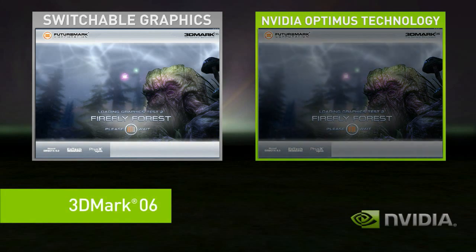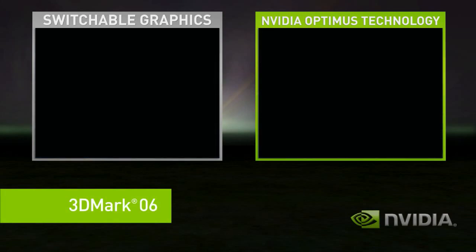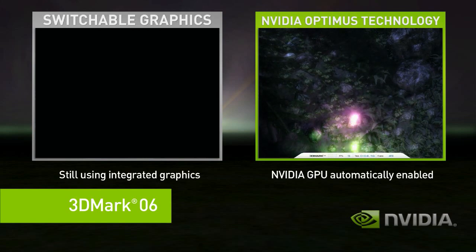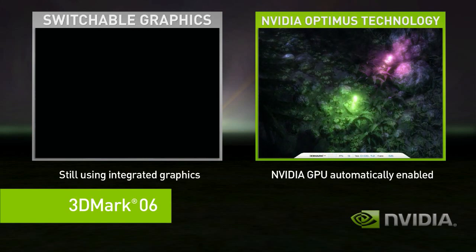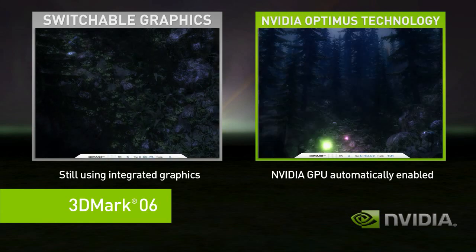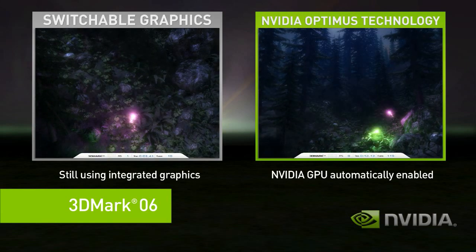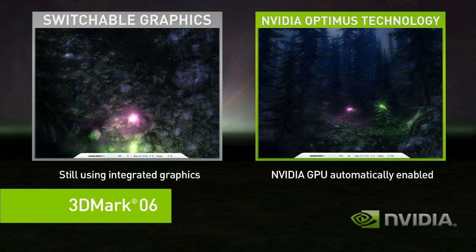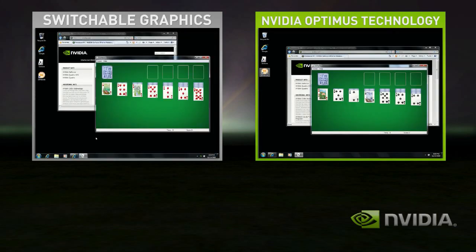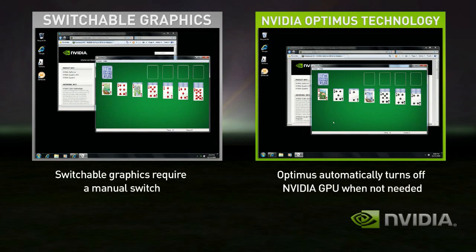In this demo, we'll use the benchmark 3DMark. Optimus, on the right-hand side, when it starts a complex application, it automatically uses the discrete GPU. The performance difference between the two is easy to see. Even better with Optimus, when you go back to your basic applications, the discrete GPU automatically turns itself off and you get great battery life.